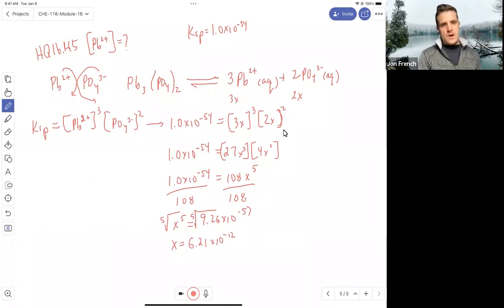If your calculator, depending on your calculator, if you don't have that capability, the same thing as doing the fifth root would be taking that 9.26 times 10 to the minus 57 and raising it to the one-fifth. That would be the same thing as taking the fifth root. So depending on your calculator, you may not have that ability.